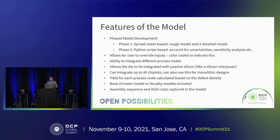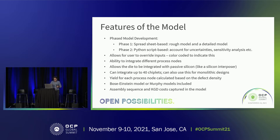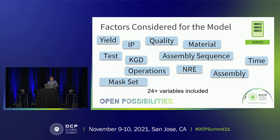The model allows integration of different process nodes, integrating die with a silicon interposer as a passive interposer, and supports up to 40 chiplets compared against a monolithic design. Yield of each process node is incorporated using two models: the Bose-Einstein model based on defect density, and the Murphy model. We also include the full assembly sequence and known good die — which two pieces attach next, how they mount on the substrate — and trade-offs of inserting tests. We initially thought five or six variables, but ended up with about 24.